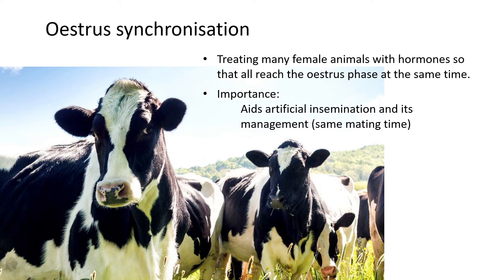The main thing oestrus synchronization does is delay oestrus from happening. If you've got some cows in the meta-oestrus phase or some in the di-oestrus phase and you want them all to reach oestrus at the same time, the hormone treatment ensures all animals stay in pro-oestrus — the first phase — and don't go past it. The hormone treatment allows the follicle to mature into the Graafian follicle but stops ovulation from happening.